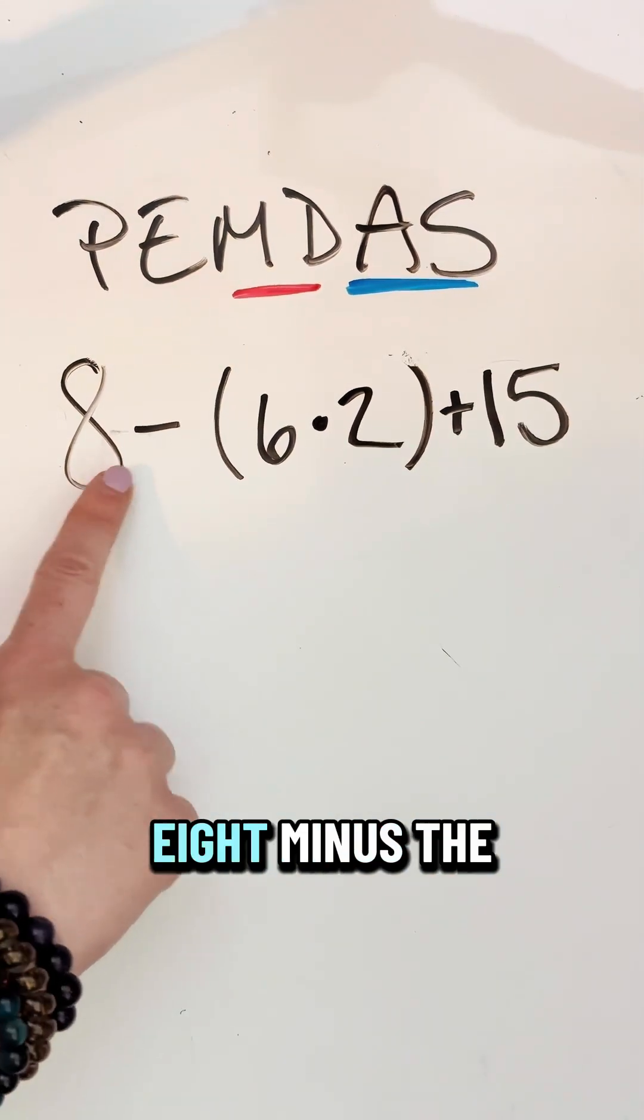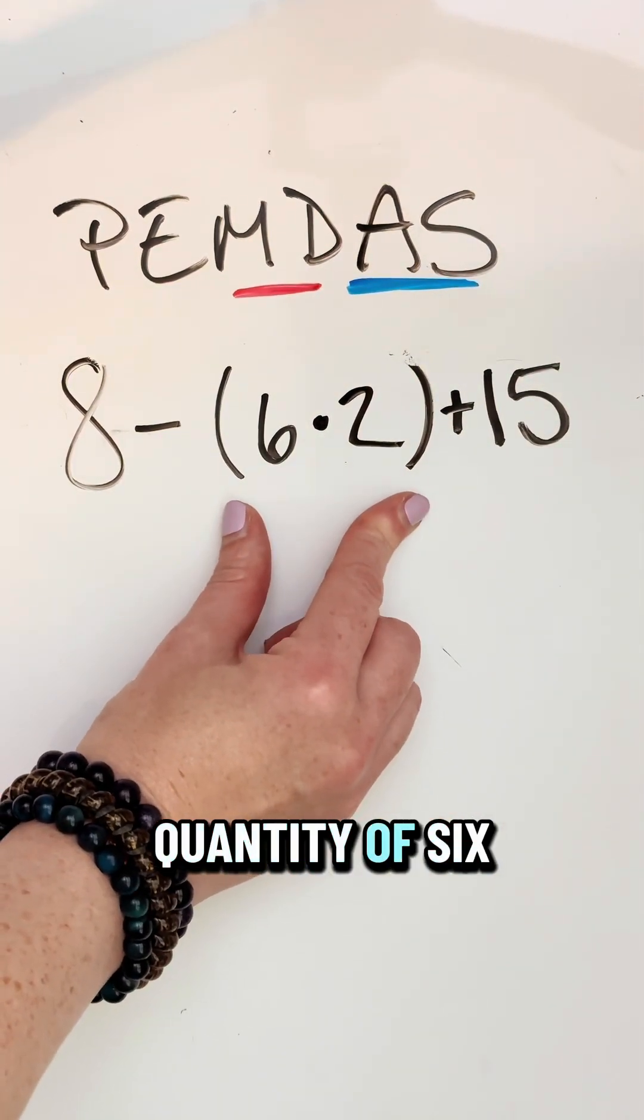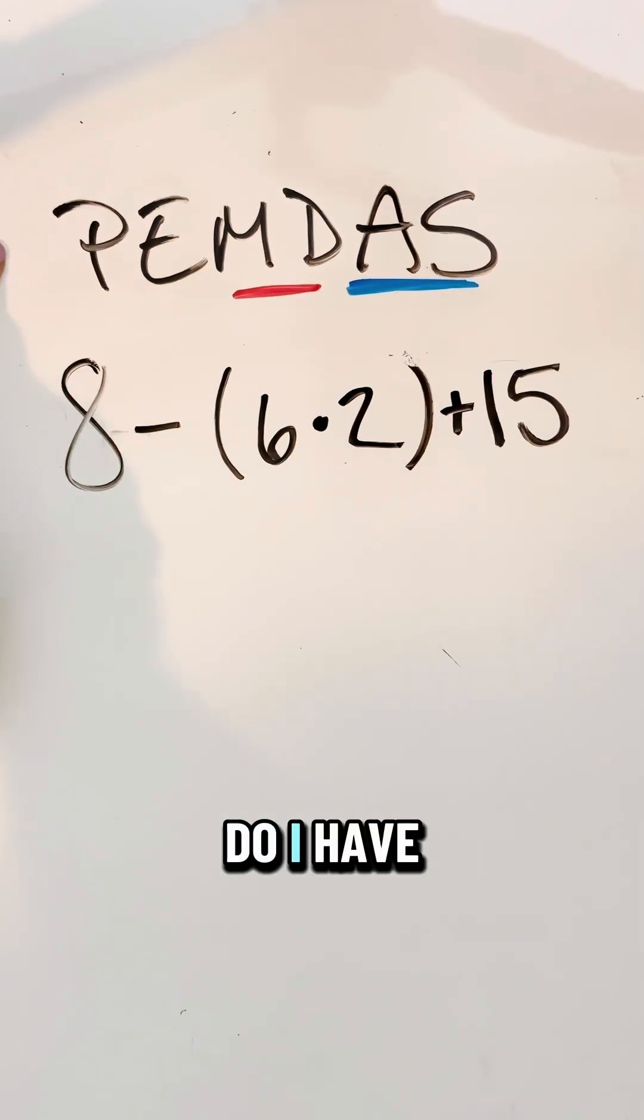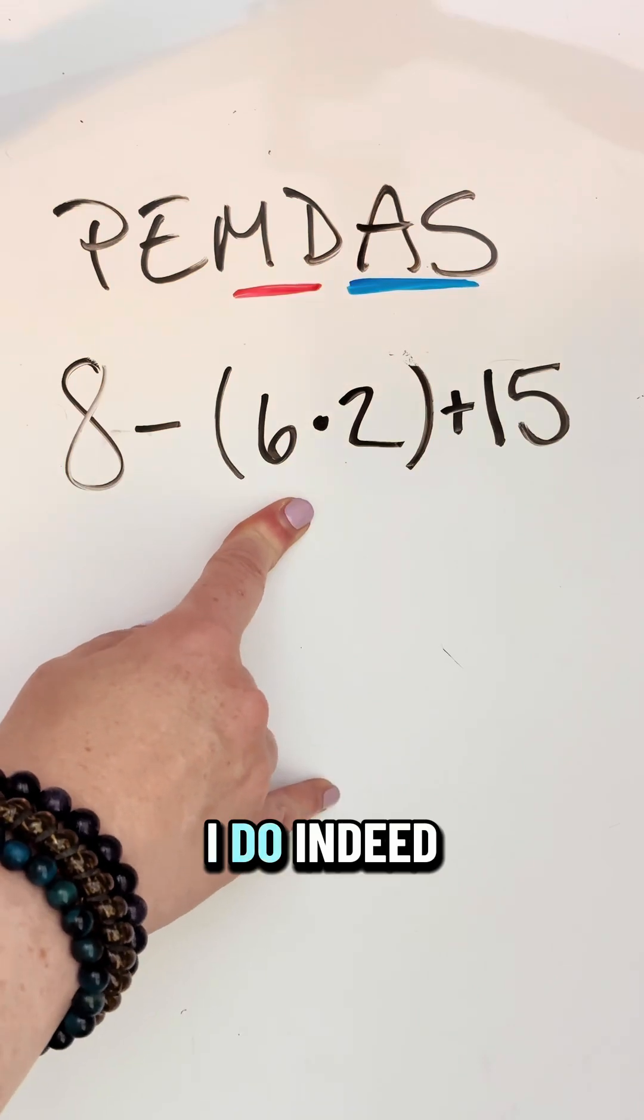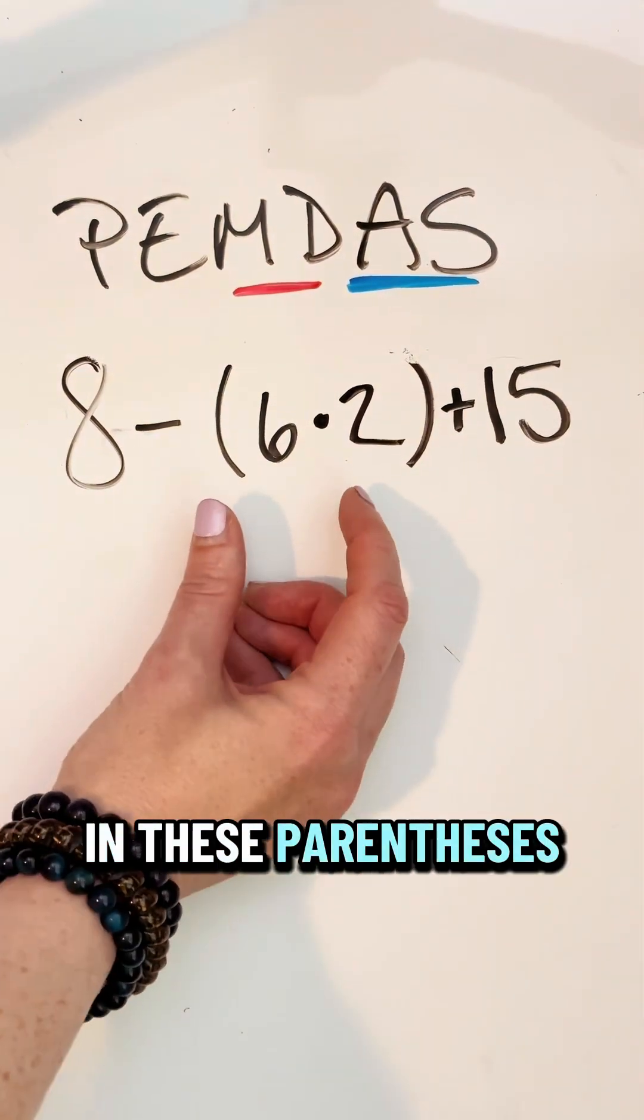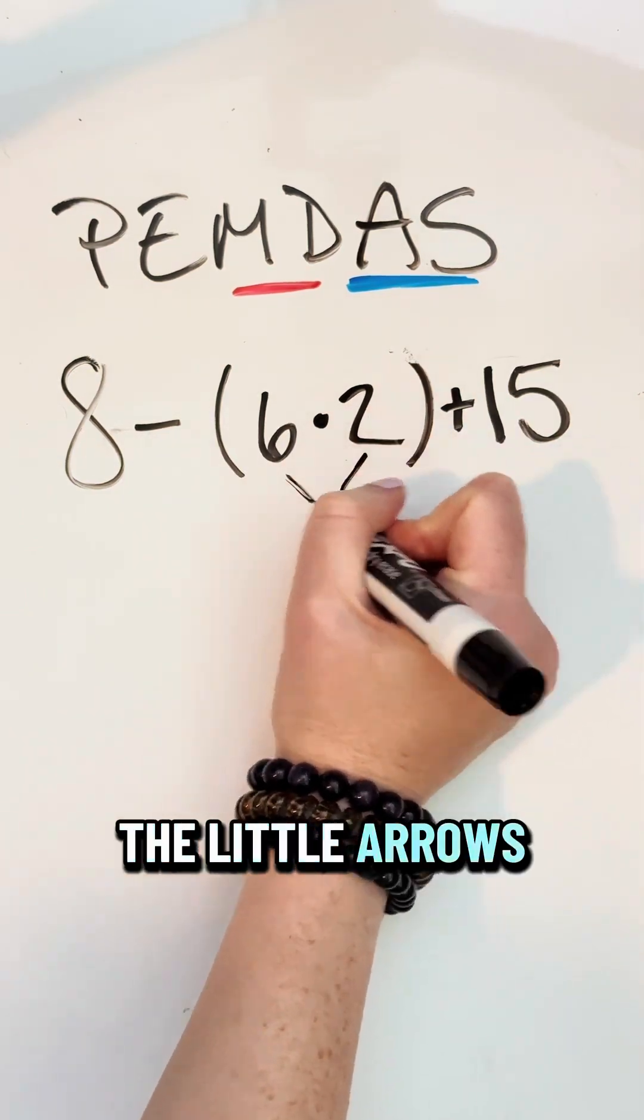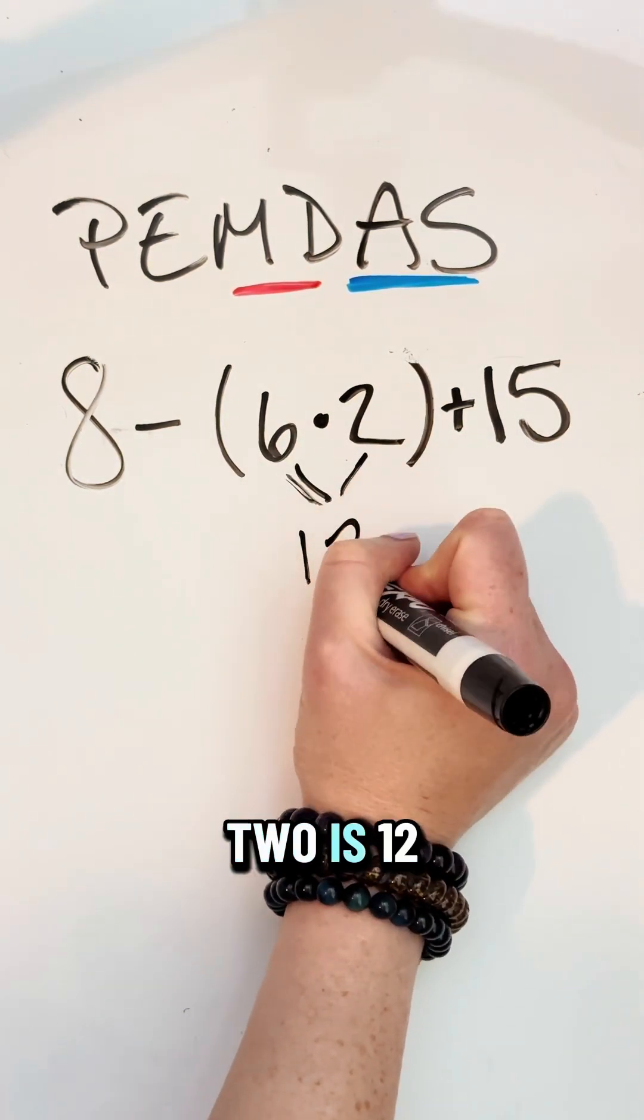So we're going to start with this problem. 8 minus the quantity of 6 times 2 plus 15. To my checklist. Do I have any parentheses? I do indeed. So that's what I'm going to do first. In these parentheses, I'm going to do the 6 times 2. One visual is just like some kids like to draw the little arrows. They're doing this first. 6 times 2 is 12.